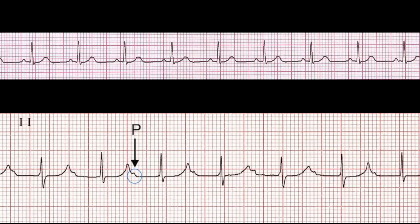On the top portion of the screen you'll see a normal sinus rhythm — there's a P wave before each QRS complex, a QRS complex, and a T wave, and everything looks normal. On the bottom portion you'll see a first-degree AV block. Look at how far away that P wave is from the QRS complex — that P wave is way too far from the QRS to be normal sinus rhythm.